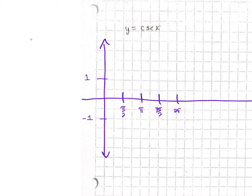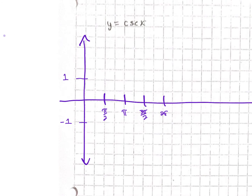Alright, so to graph the cosecant graph, we're actually going to — and this is not considered part of the graph, this is just to help us create the graph — we're going to lightly sketch in, and I'm going to do this in highlighter, the basic sine curve, because we're going to use that to help us actually create our cosecant graph.